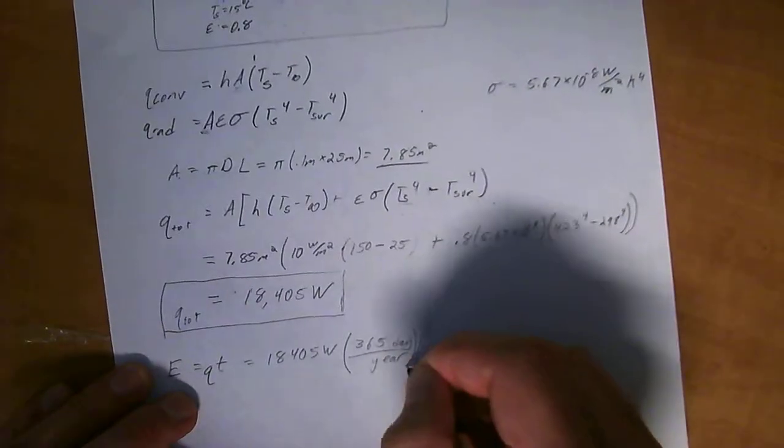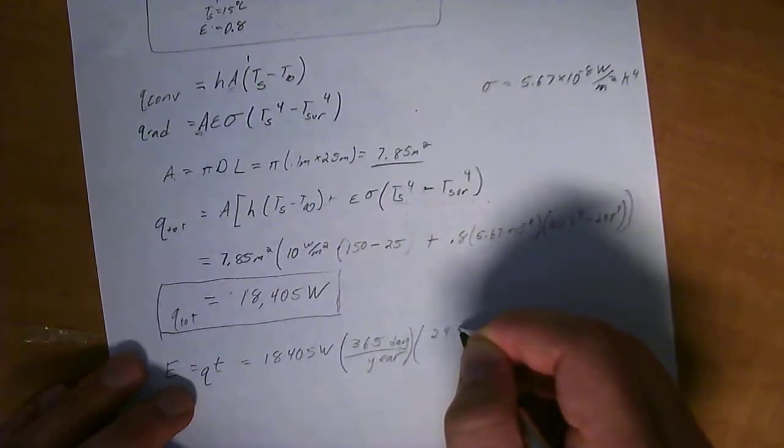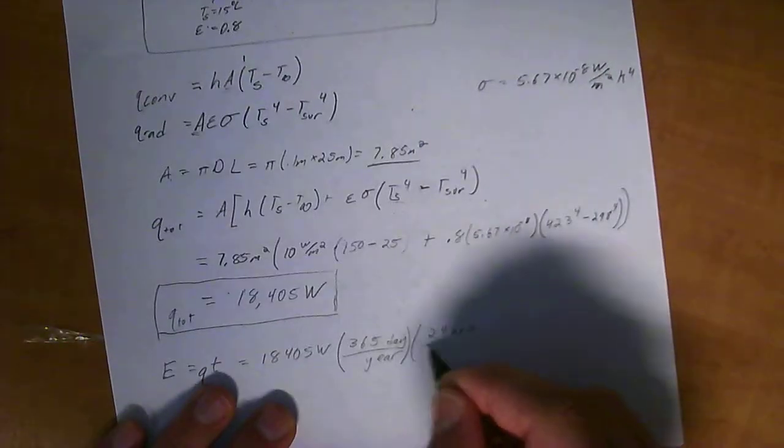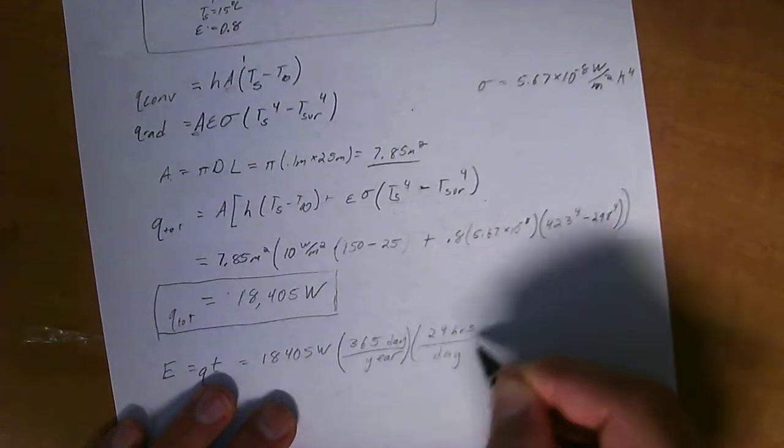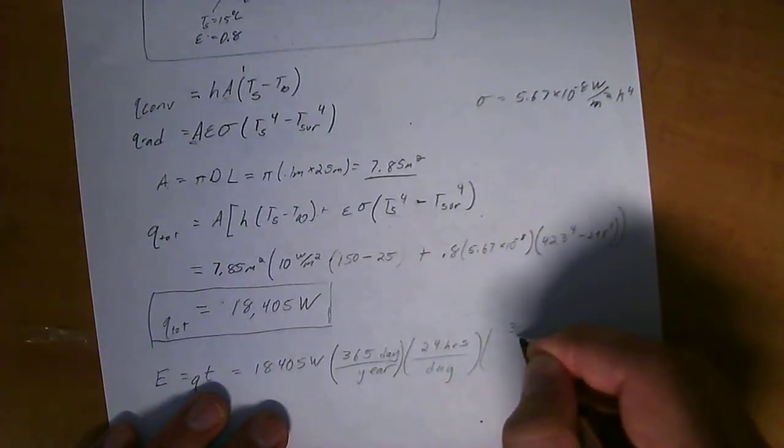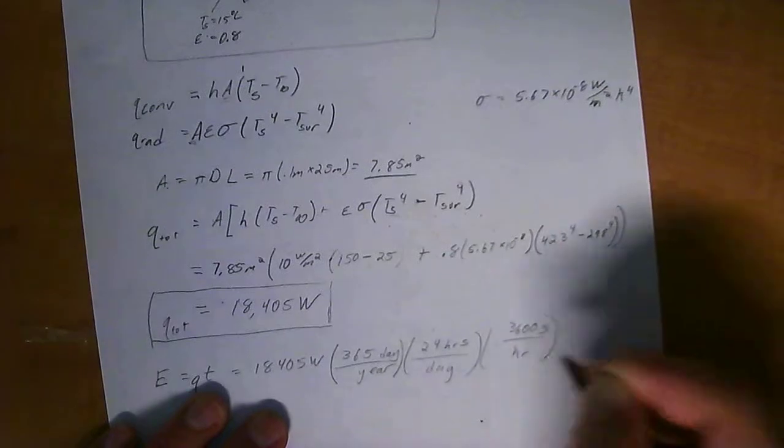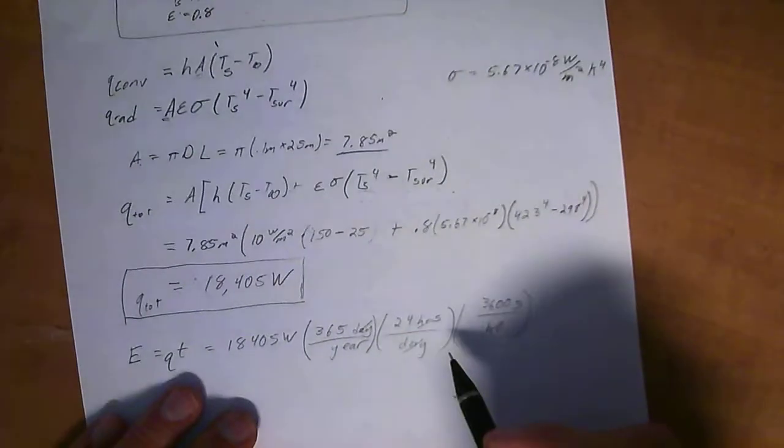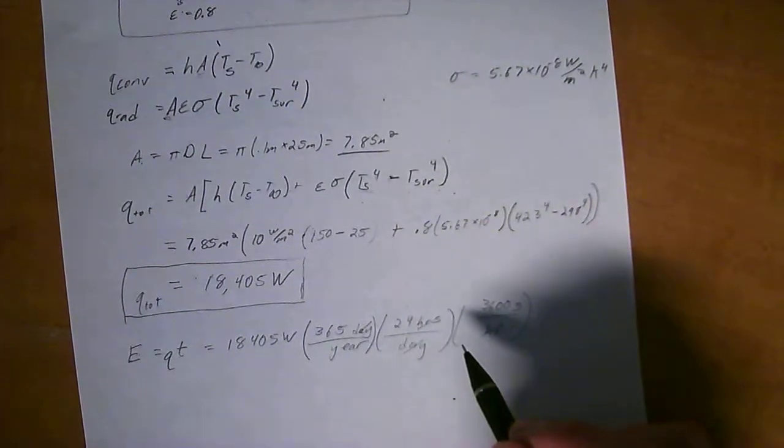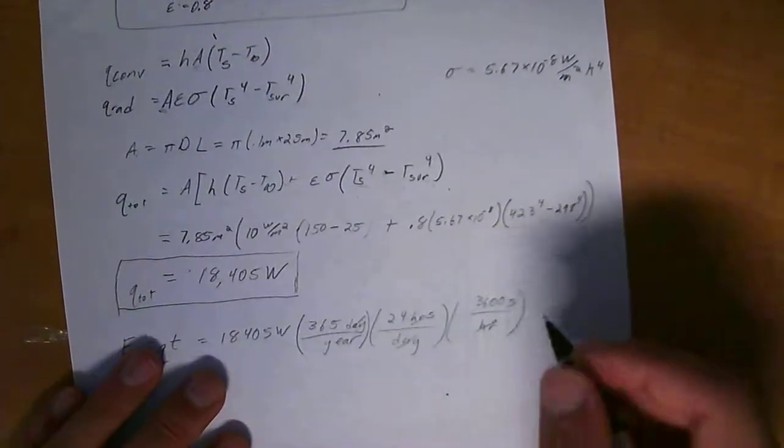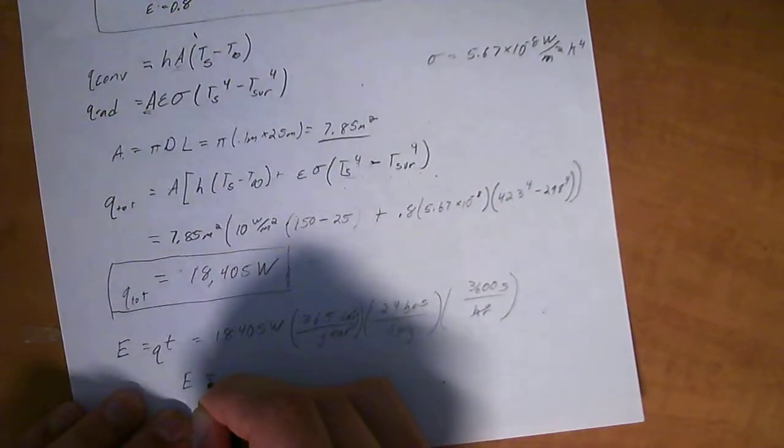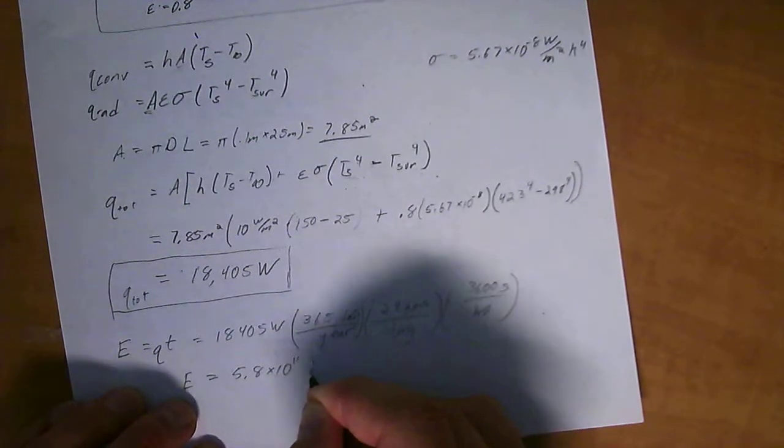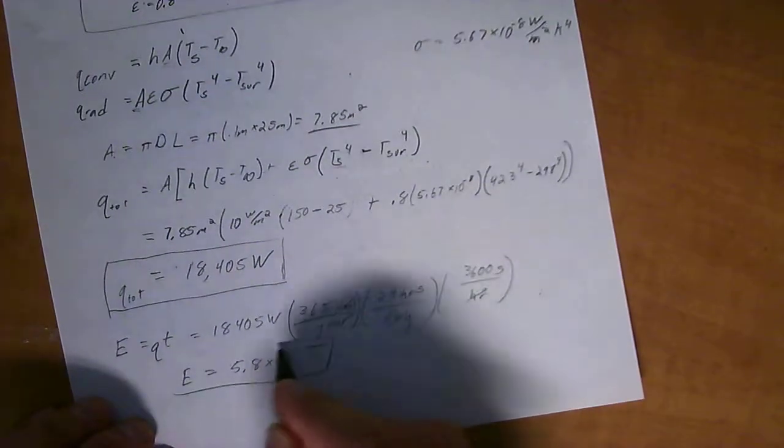So we've got 365 days per year. Then we've got 24 hours per day. Then we've got 3600 seconds per hour. Like this. And you know that hours cancel with that, days cancel with that. And multiplying this all out, you'll end up with a total E equal to total energy used over the year of 5.8 times 10 to the 11 joules.